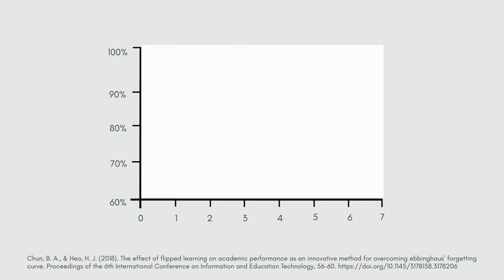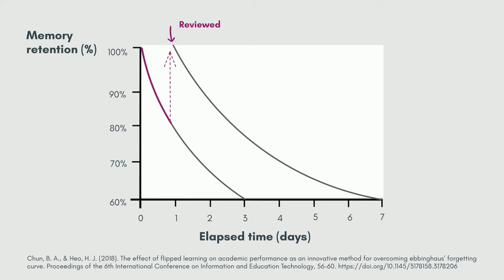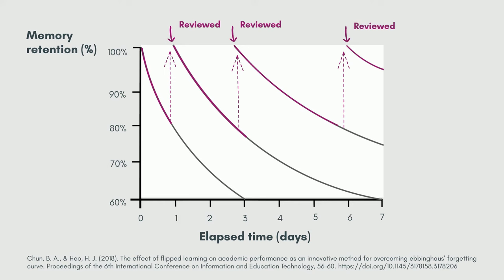Some of these recent studies have also shown that if you interrupt the forgetting shortly after learning the information — for example by reviewing it the next day — you will forget it more slowly than before. Each subsequent review causes you to forget even more slowly.